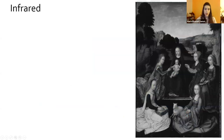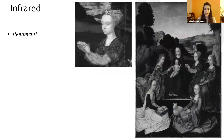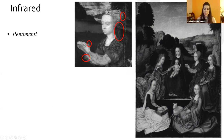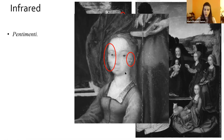In the infrared, we found several pentimenti, which means changes of thought of the painter. For example, here in Saint Barbara, Isenbrant first painted her with long hair, but then decided to paint her with just a bun. The most interesting case is Saint Agnes: Isenbrant originally painted her in profile, and here you can see her eye, nose, mouth, and ear.